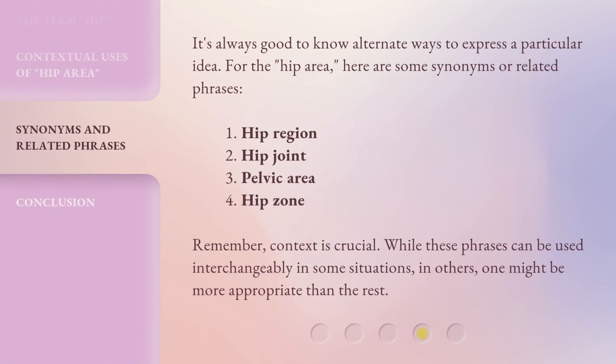It's always good to know alternate ways to express a particular idea. For the hip area, here are some synonyms or related phrases: hip region, hip joint, pelvic area, and hip zone. Remember, context is crucial. While these phrases can be used interchangeably in some situations, in others, one might be more appropriate than the rest.